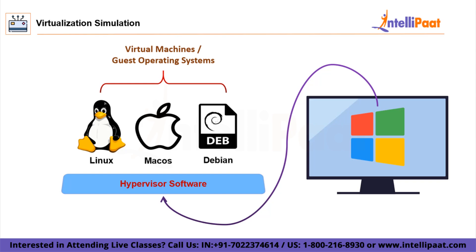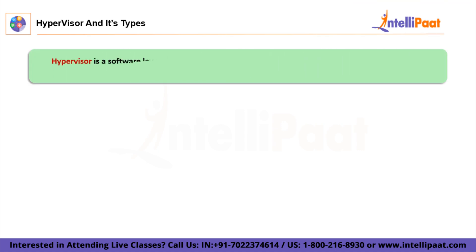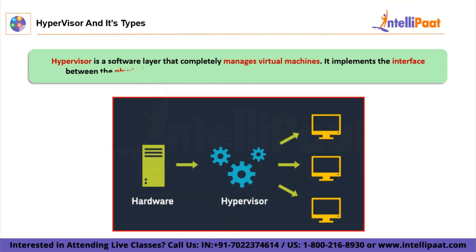This phenomenal access to uninstalled software with the same convenience, speed, and optimal utilization is only possible because of software known as a hypervisor. A hypervisor is a software layer which completely manages or overlooks virtual machines. What it does is implement the interface between both the physical system and virtual machines, which ensures the proper allocation of resources. It also manages the virtual machine instances so that they don't interfere with one another's resources.